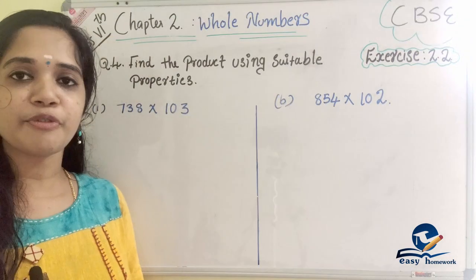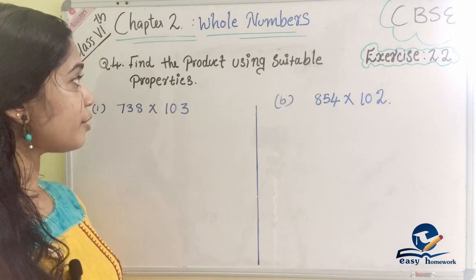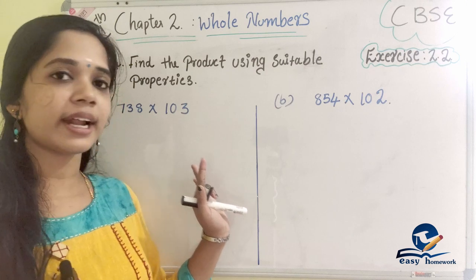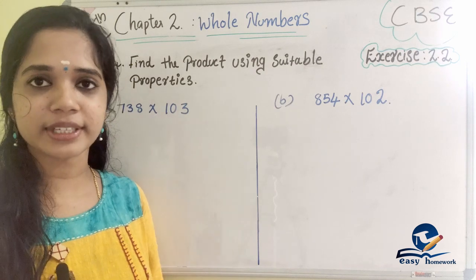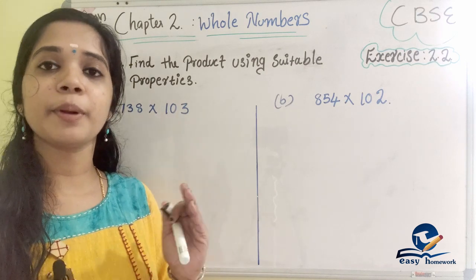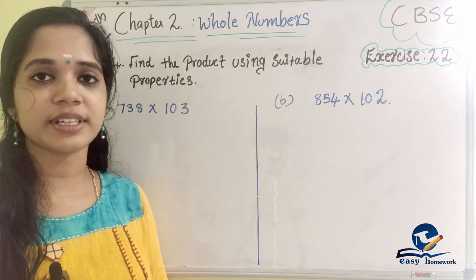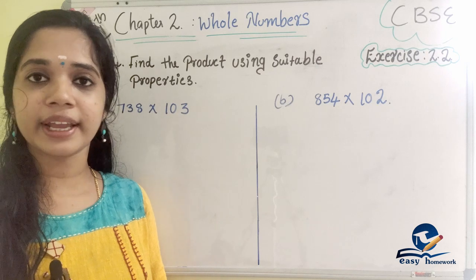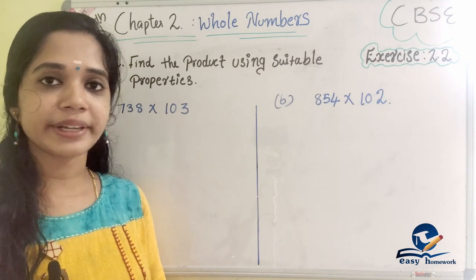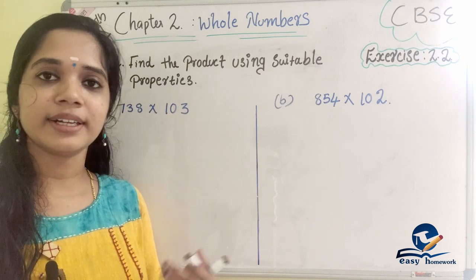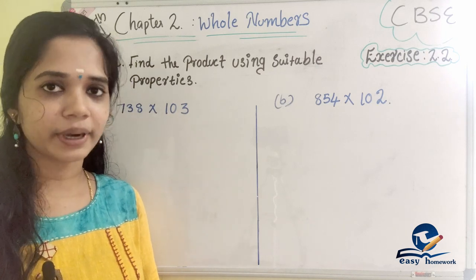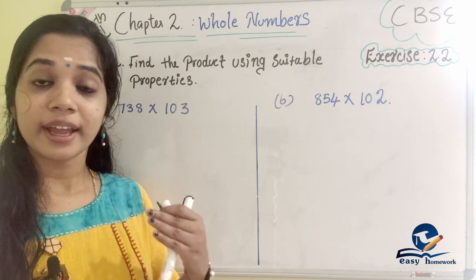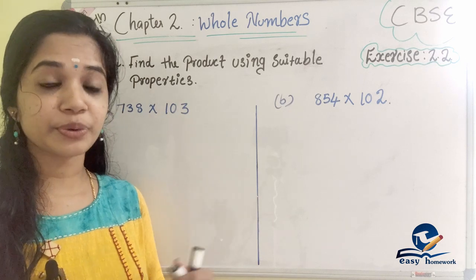Question 4 is to find the product using suitable properties. We will learn how to use the distributive property, associative property, and commutative property. These properties will be used.